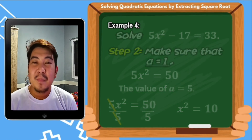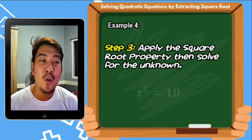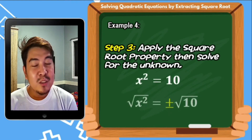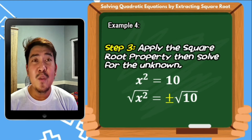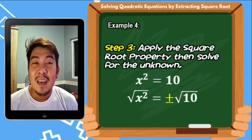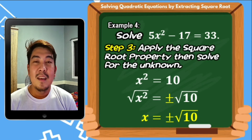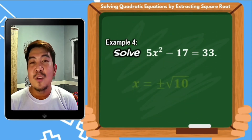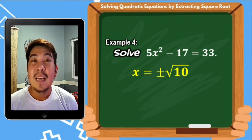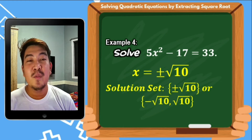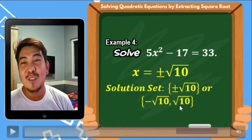We proceed with the last step: apply the square root property and solve for the unknown. From x squared equals 10, we extract square roots. The square root of x squared is x. As for the square root of 10, since 10 is not a perfect square, the value of x will be positive or negative square root of 10. The solution set is the set containing negative square root of 10 and square root of 10.